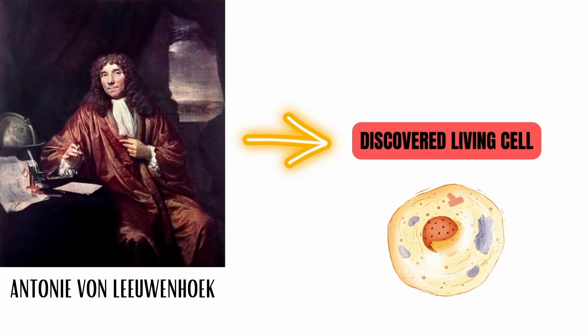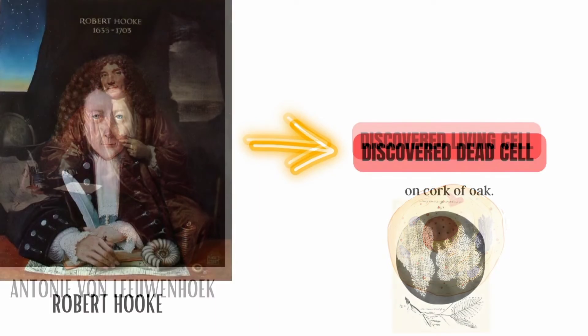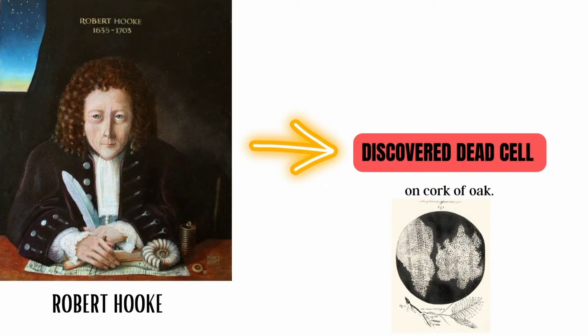Antony van Leeuwenhoek discovered living cells. Robert Hooke discovered dead cells on cork.